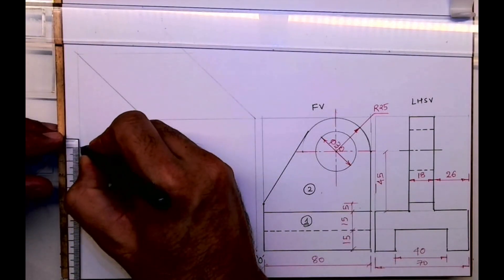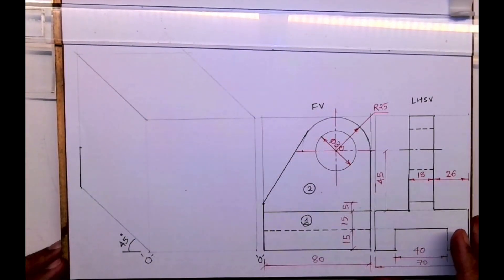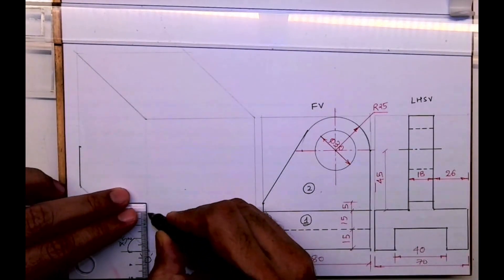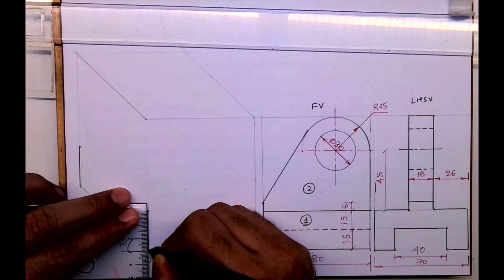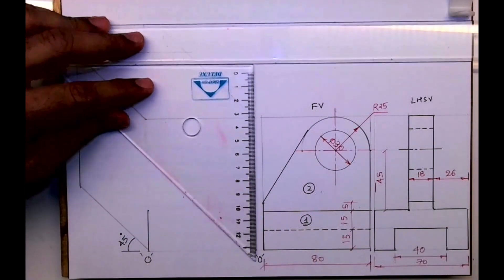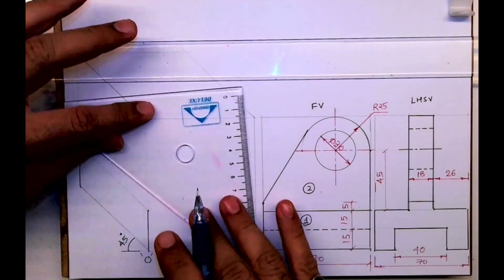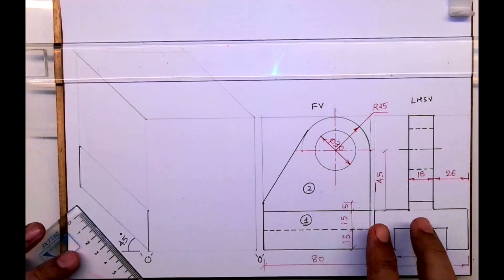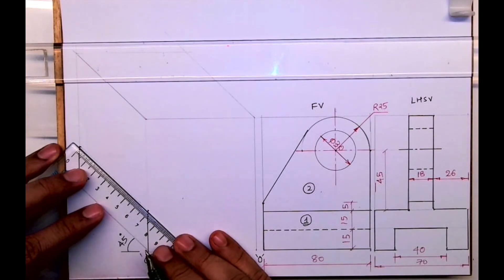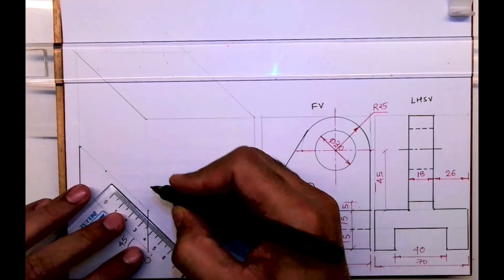This is an ICAC technical drawing exam board paper from around 2015. It's a very useful topic and it is applicable for diploma students as well as engineering students. Now here I'm taking height 30, and I'm taking 26 on both sides.